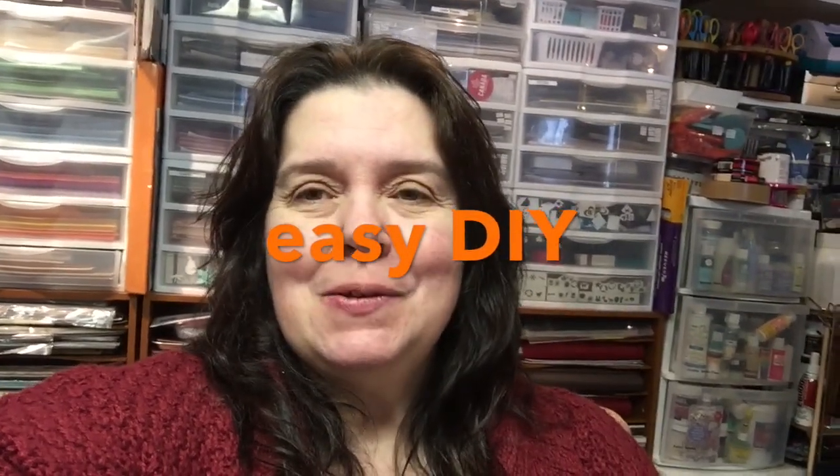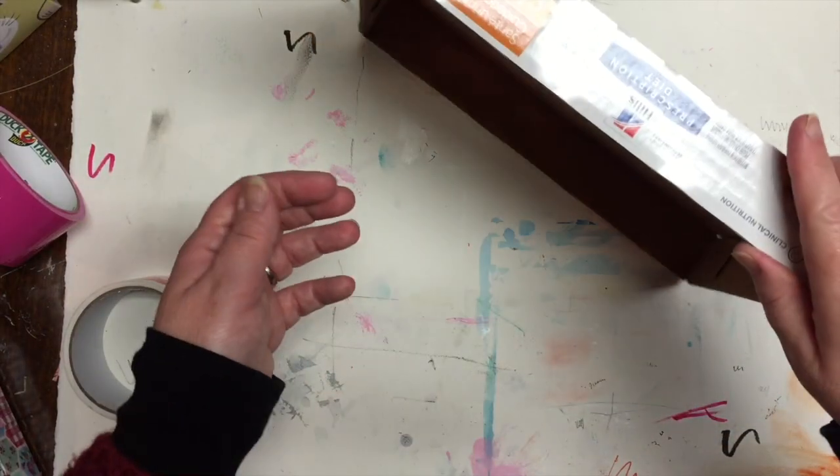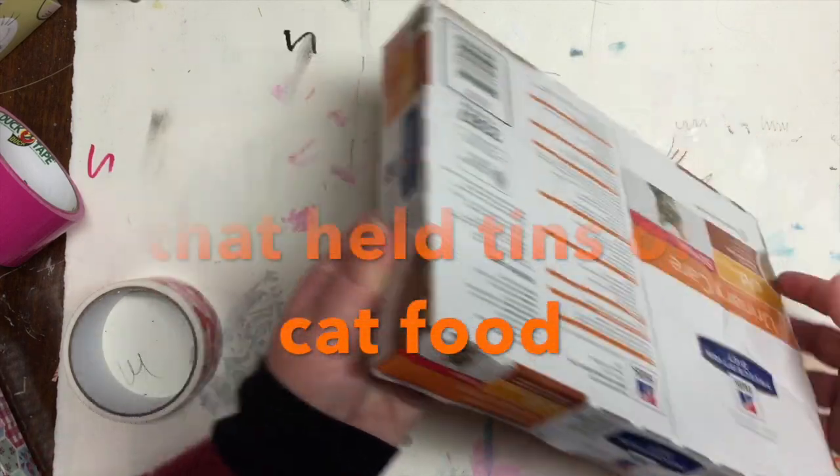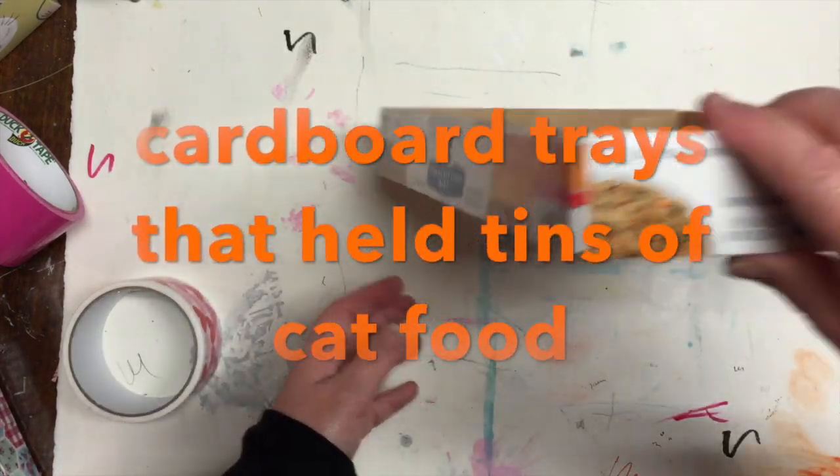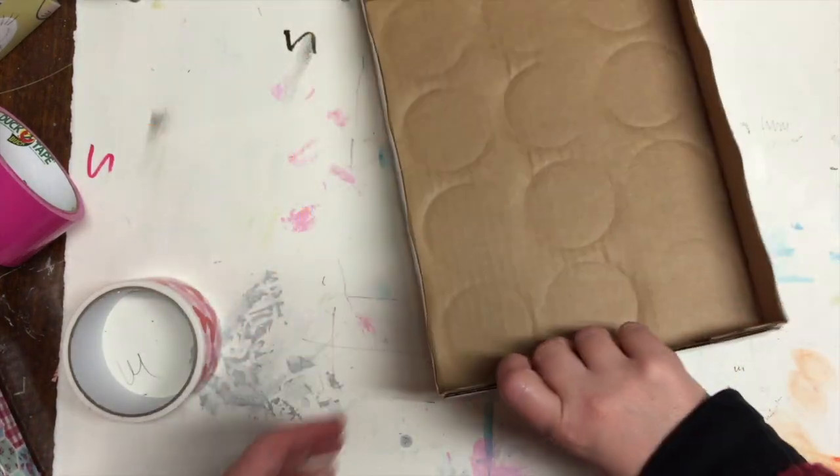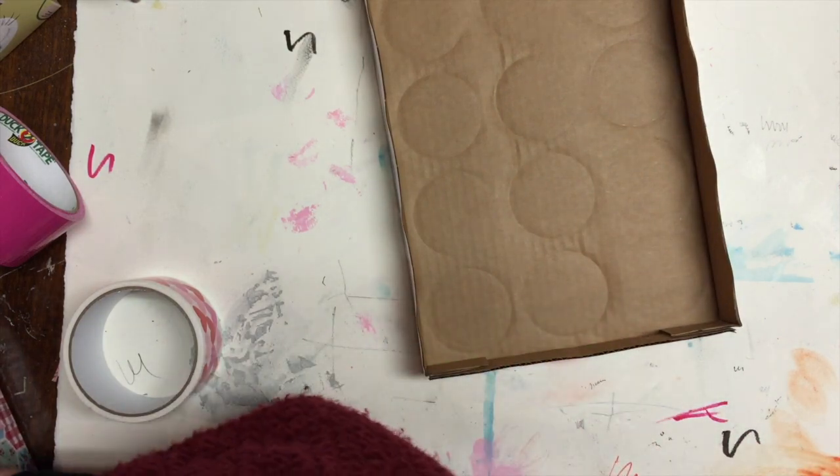So let's look down on my table to see what I'm crafting. Here I am showing you a cardboard tray that holds cans of cat food that we have to buy especially for our cat.